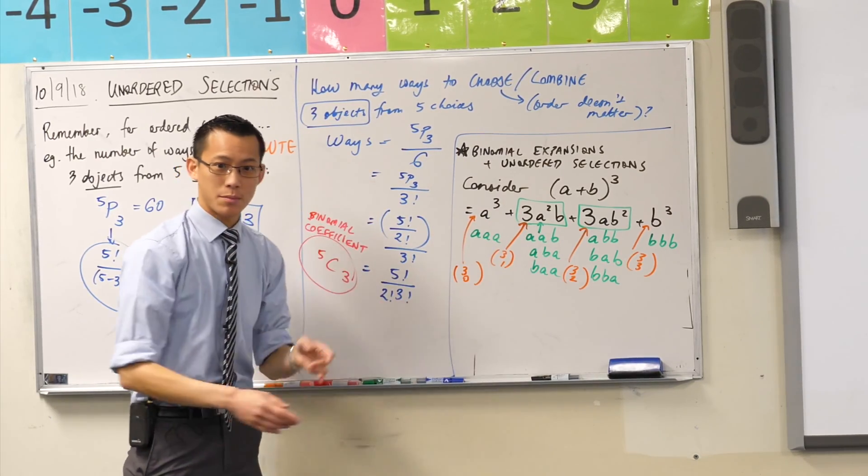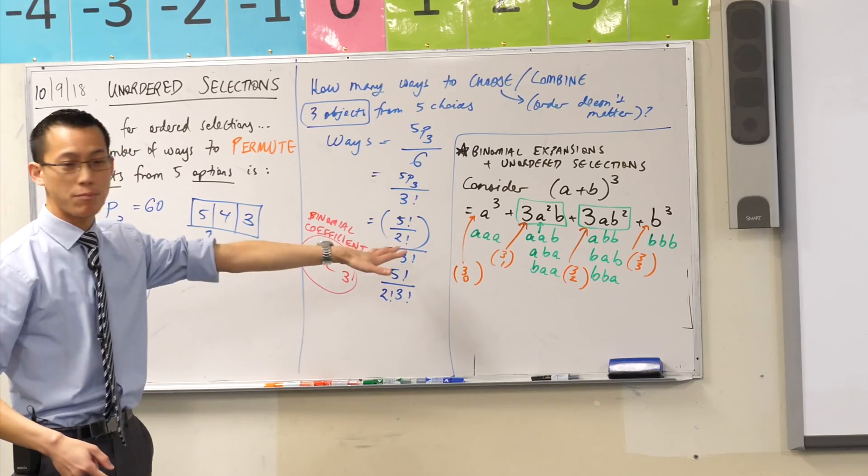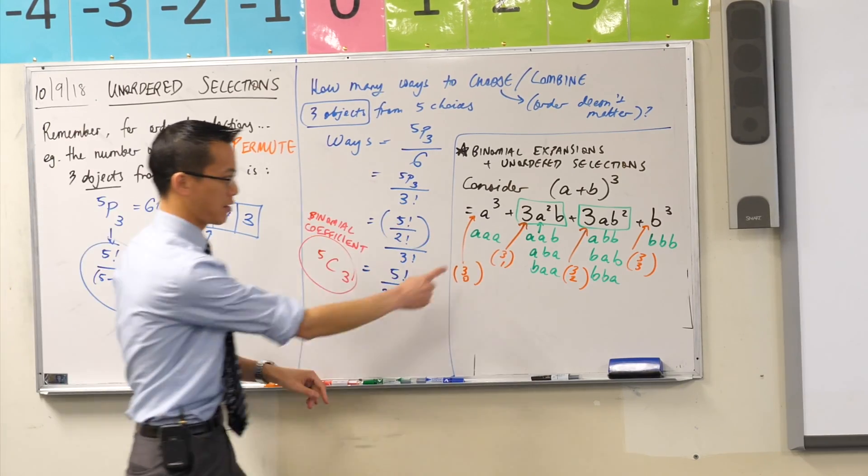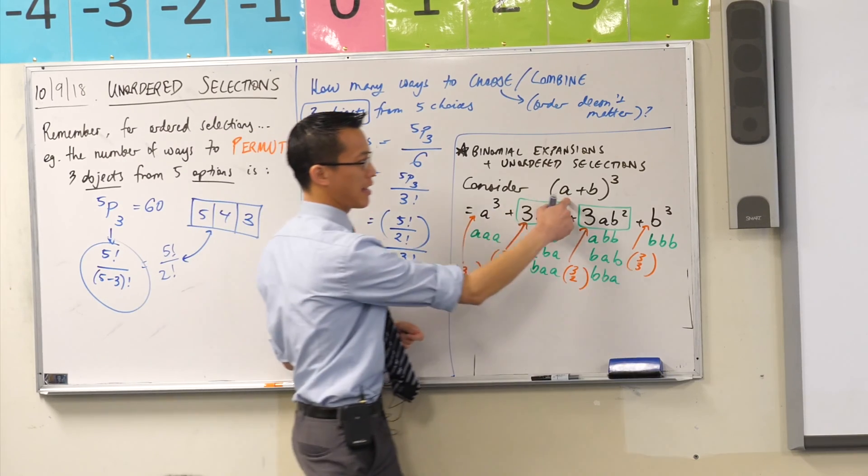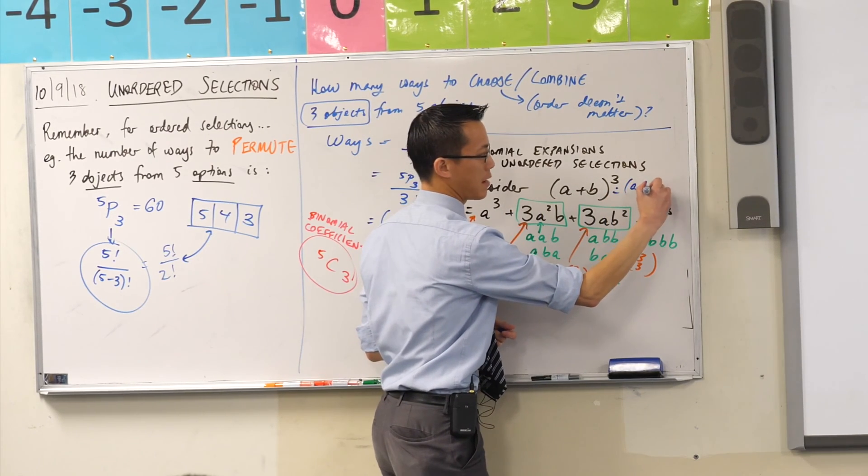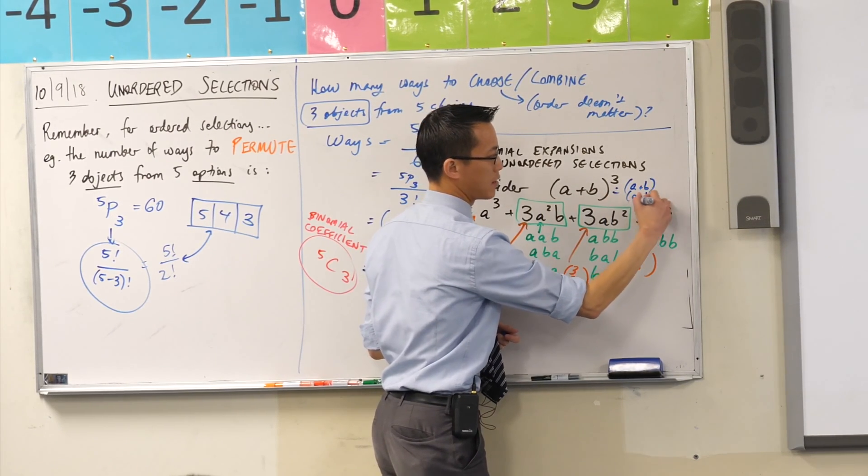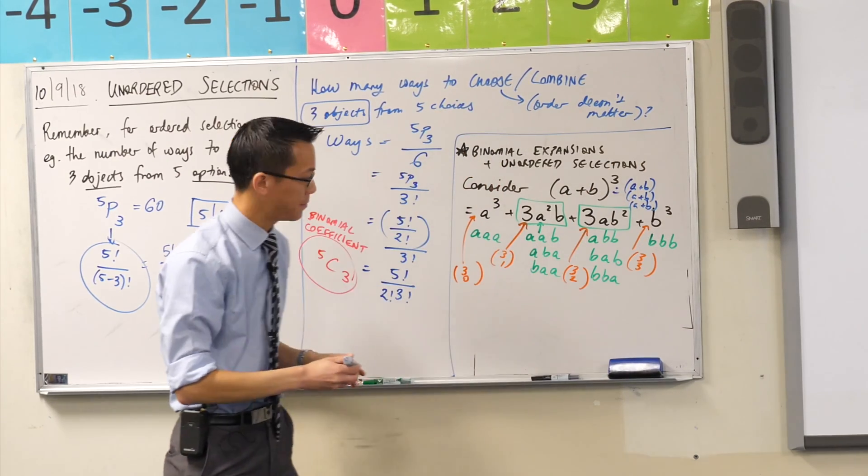Those eight terms, each time, they have three pronumerals. Do you notice that? There's going to be... you've got to choose three, right? And that should make sense because this guy here is a plus b times a plus b times a plus b. You've got to choose three every time, right?